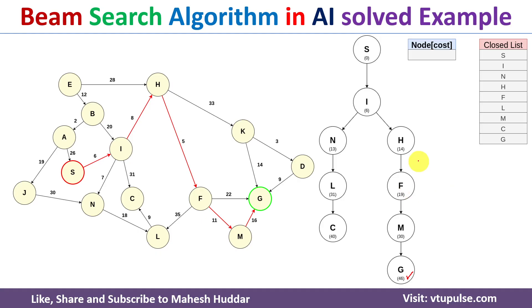In this video I discussed how to apply the beam search algorithm in artificial intelligence to find the optimal path and optimal cost from the initial state to the goal state for a given graph. I hope the concept of beam search is clear. If you like the video, please like and share with your friends, subscribe for more videos, and press the bell icon for regular updates. Thank you for watching.